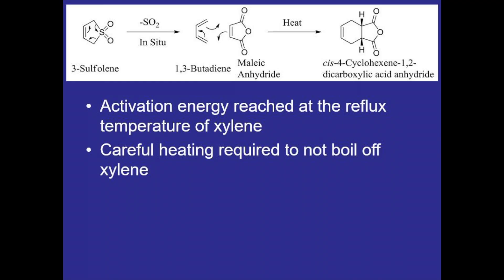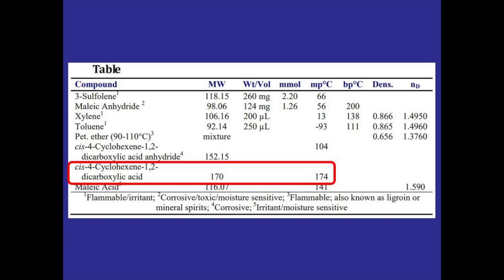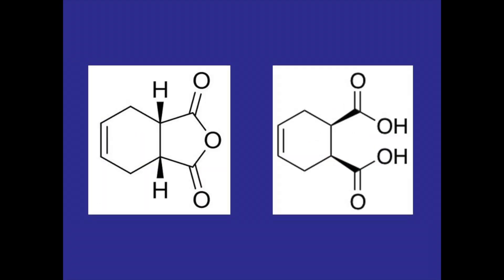But we need to be careful not to get it too hot because if we boil off too much xylene, the reaction vessel will heat up and that'll create contamination where the product actually starts to decompose into a dicarboxylic acid instead of an anhydride as shown here in the table. So the anhydride product that we want is shown here on the left but we can see the dicarboxylic acid contamination if we allow it to get too hot.